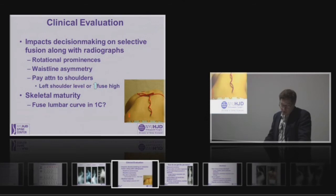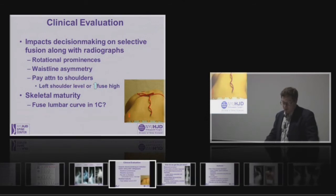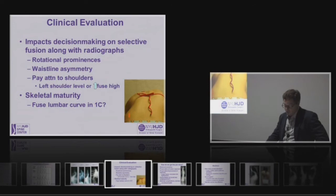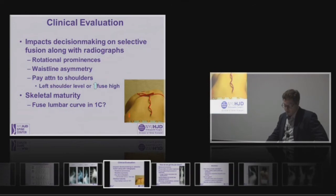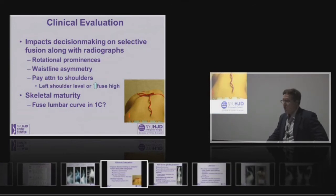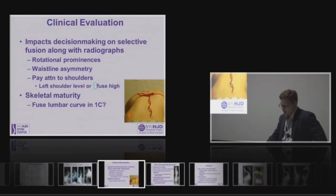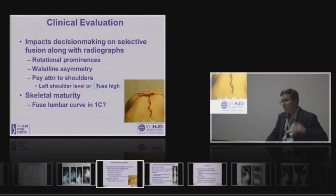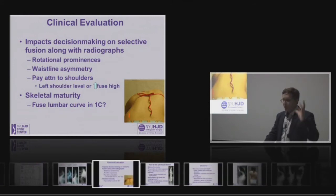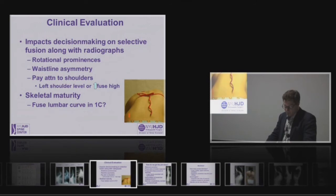We look at the prominences, waistline asymmetry, and we want to pay attention to the left shoulders. If the left shoulder is level or higher, I would just grab one or two extra vertebrae and compress down on that left upper side.